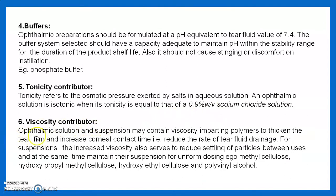Viscosity contributors: ophthalmic solutions and suspensions may contain viscosity-imparting polymers to thicken the tear film and increase corneal contact time, thereby reducing the rate of tear fluid drainage. For suspensions, increased viscosity also reduces settling of particles between uses and maintains uniform dosage. Examples include methyl cellulose, hydroxypropyl cellulose, hydroxypropyl methyl cellulose, hydroxyethyl cellulose, and polyvinyl cellulose.